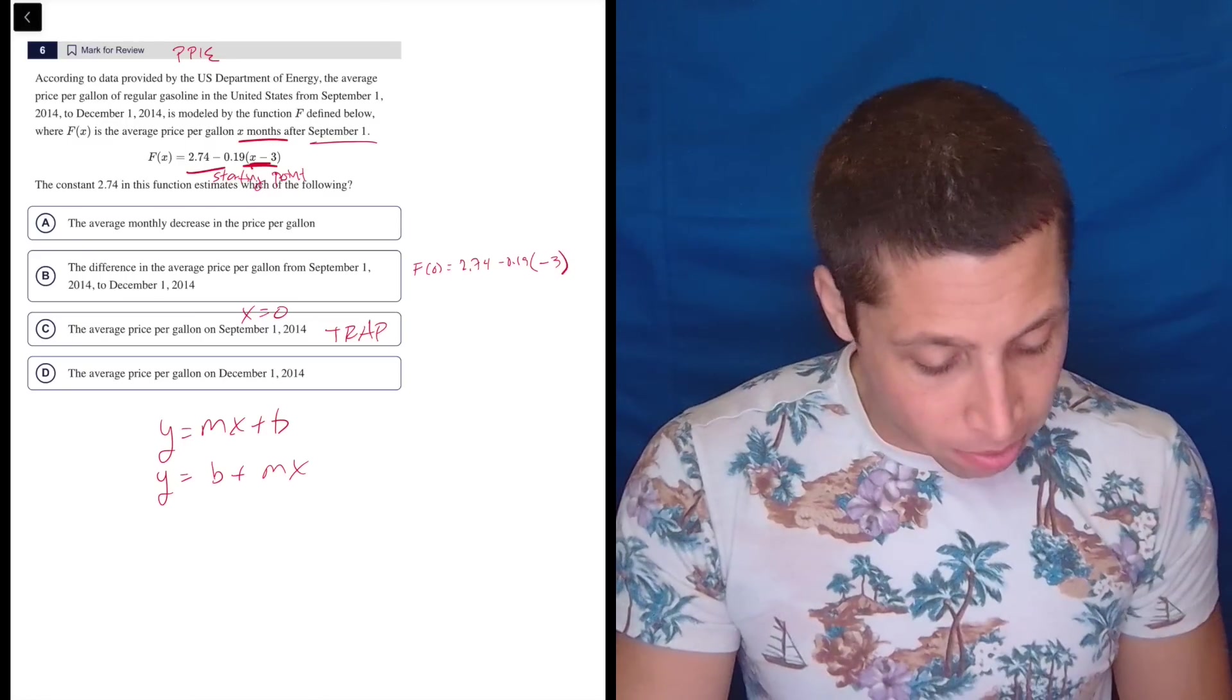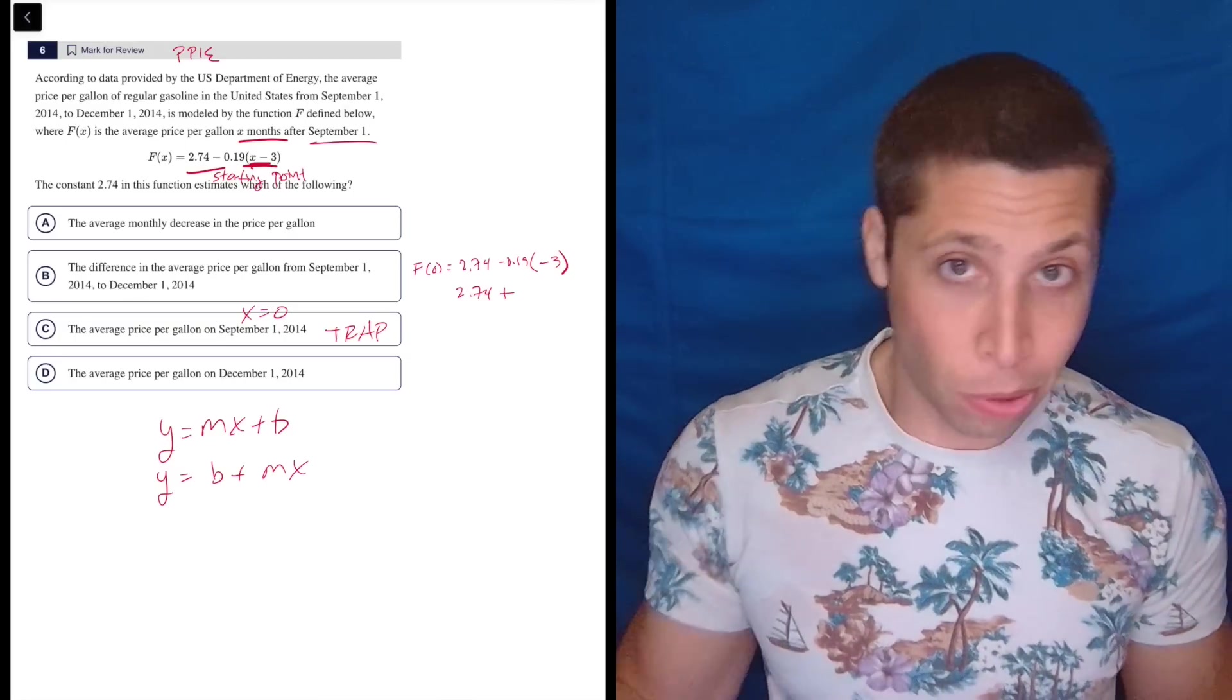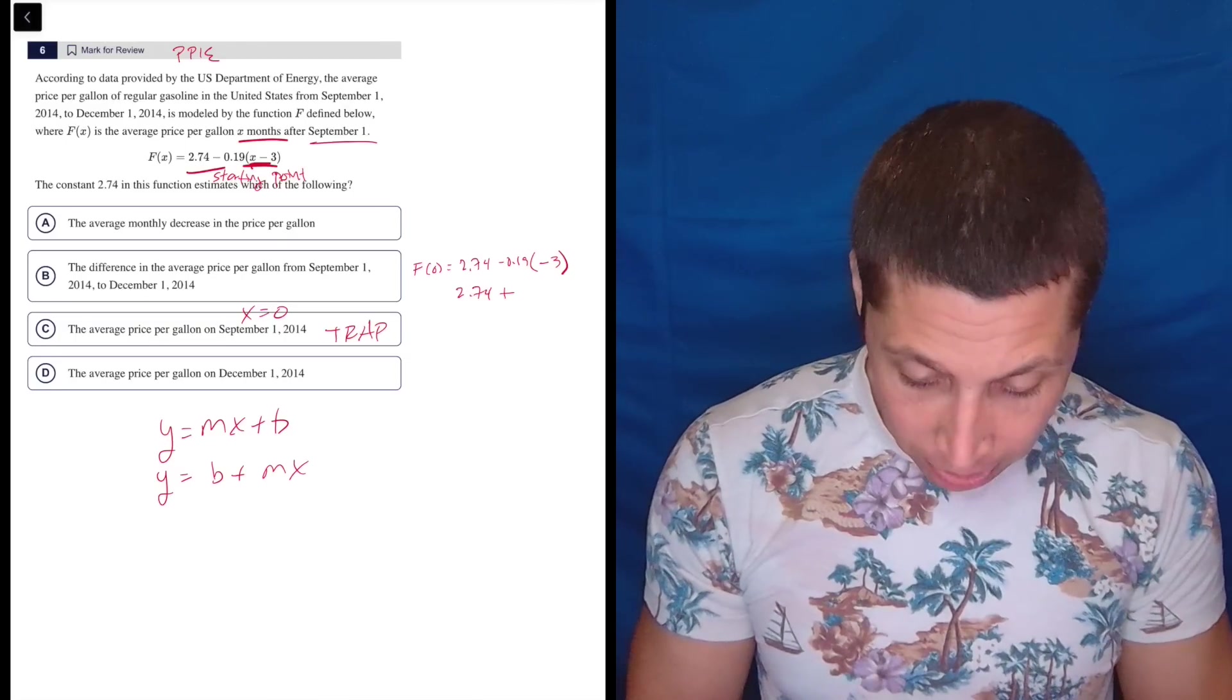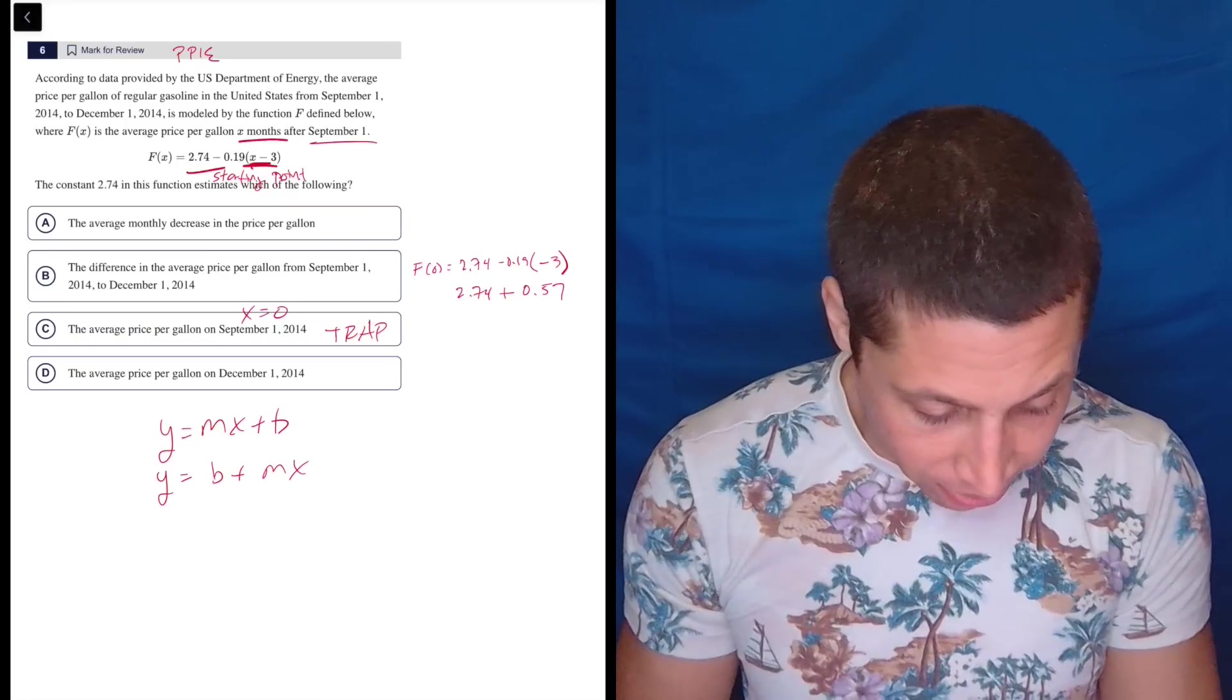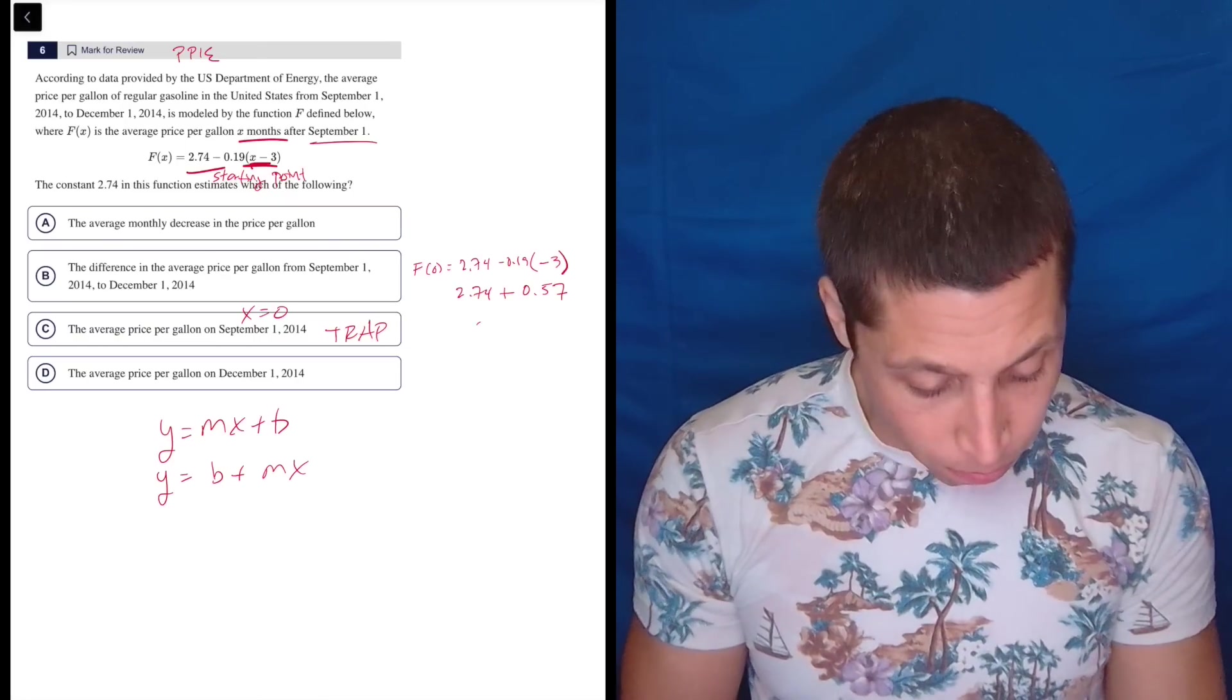So that's times negative 3. So that's 2.74 plus, just use the calculator for a second, 0.19 times 3 is 0.57. So plus 2.74, no, 3.31.